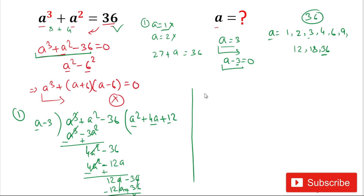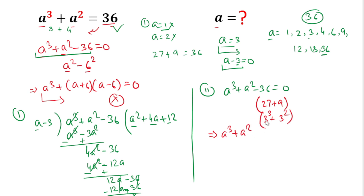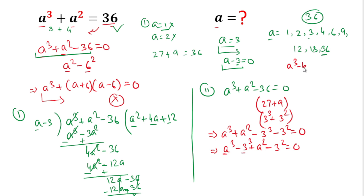By the second method, we start with a³ + a² - 36 = 0. We can write 36 as 27 + 9, where 27 = 3³ and 9 = 3². So the expression becomes a³ + a² - 3³ - 3² = 0. Rearranging: (a³ - 3³) + (a² - 3²) = 0. The first group is in the form a³ - b³.